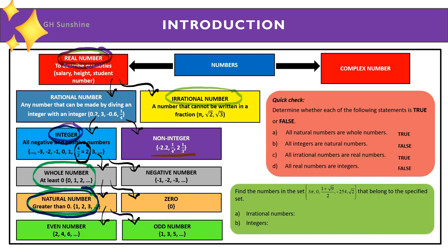Let's try another question where you need to find numbers from a given set. For irrational numbers — numbers that cannot be written as a fraction — the answers are 3pi and square root of 2. For integers — all negative and positive whole numbers — the answers are 0, 1, square root of 9 over 2, negative 2, 5, and 4.